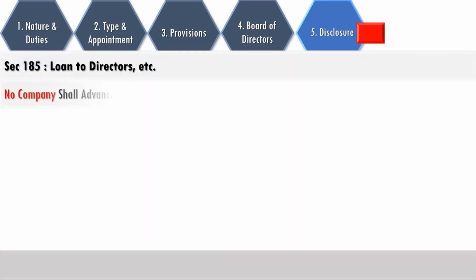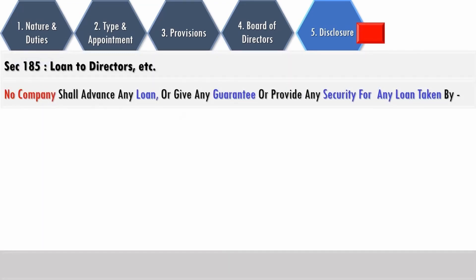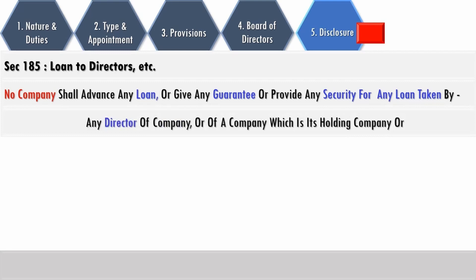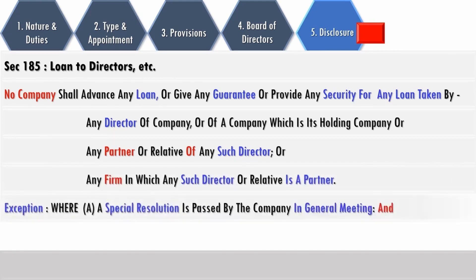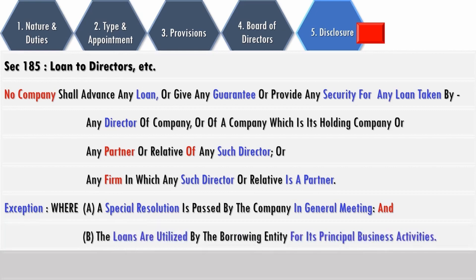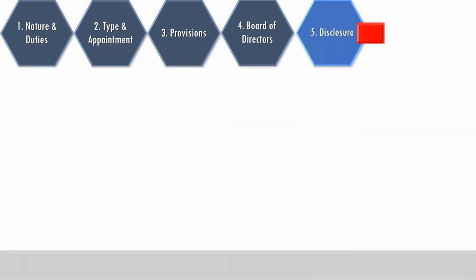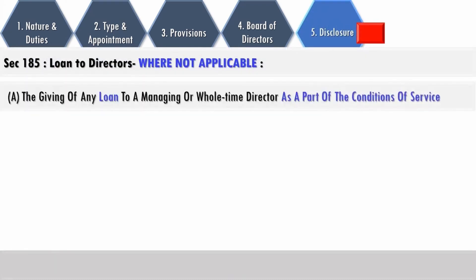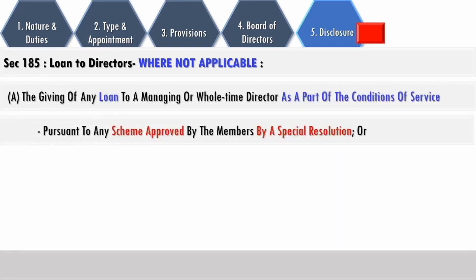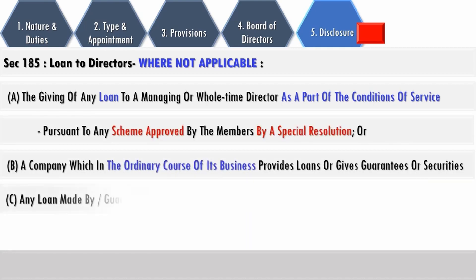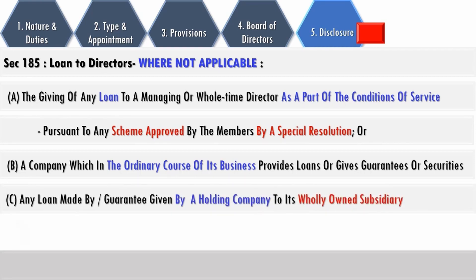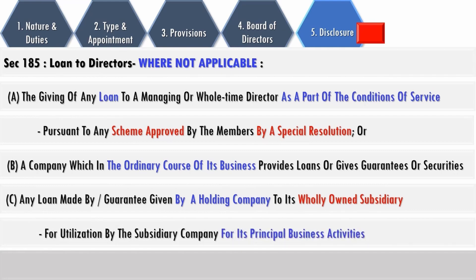No company shall advance any loan or give any guarantee or provide any security for any loan taken by a director of the company or of its holding company, or any partner or relative of any such director, or any firm in which such director or relative is a partner, with the exception where a special resolution is passed by the company in a general meeting and the loans are utilized by the borrowing entity for its principal business activities. The restrictions under Section 185 on loans to directors are not applicable in three specific cases: giving any loan to a managing or whole-time director as part of conditions of service as per a scheme approved by members by special resolution; a company which in the ordinary course of its business provides loans or gives guarantees or securities; or any loan made by or guarantee given by a holding company to its wholly owned subsidiary for utilization by the subsidiary for its principal business activities.